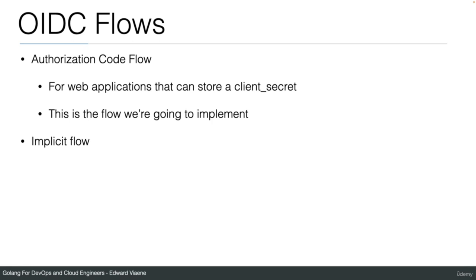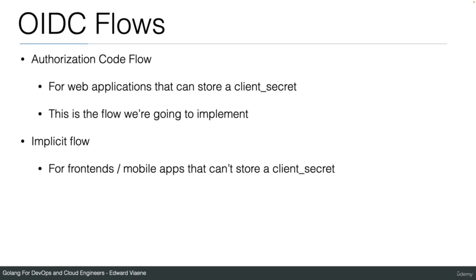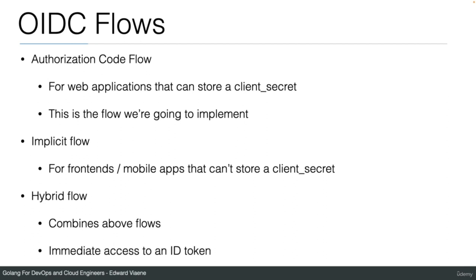Other flows include the implicit flow for frontends and mobile apps that cannot store a client secret. There's also a hybrid flow that combines the authorization code flow and the implicit flow — it has immediate access to an ID token, so you don't need multiple steps as with the authorization code flow.